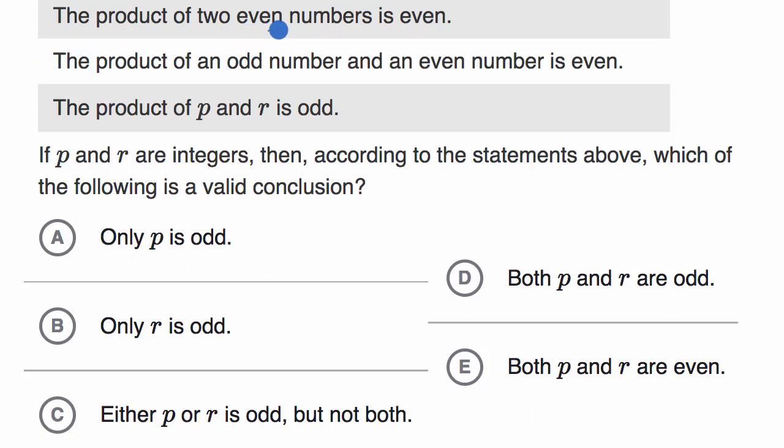We are told the product of two even numbers is even, and that is true for any two even numbers. The product of an odd number and an even number is even. That is also true for any two integers.